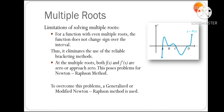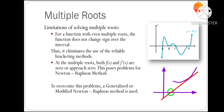For a function with even multiple roots — such as double or quadruple roots — the function does not change sign over the interval. At point B with a double root, the curve does not cross the x-axis, so the sign of the function will not change; it remains entirely positive or negative, making the root difficult to find. Also, the tangent to the curve at point B is parallel to the x-axis, so finding where the tangent line crosses the x-axis is difficult, which is why we cannot apply the Newton-Raphson method directly, as it depends on that tangent crossing.